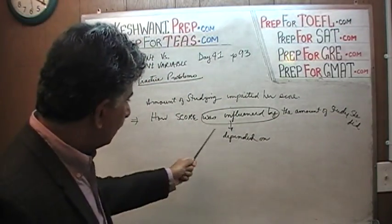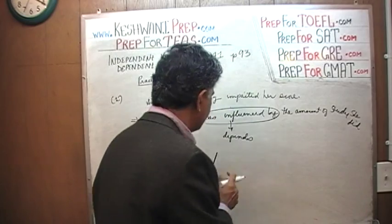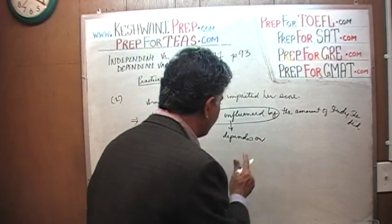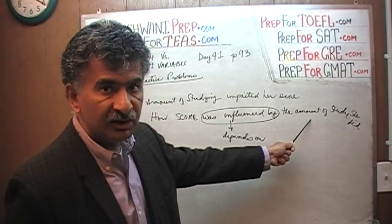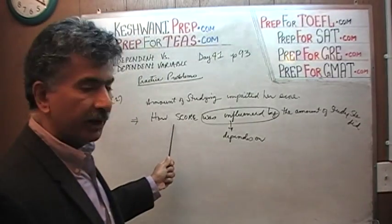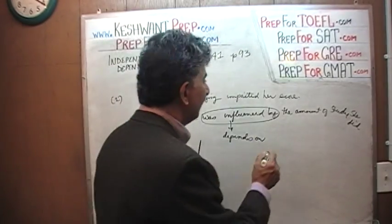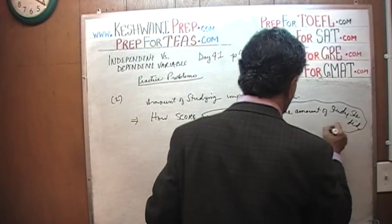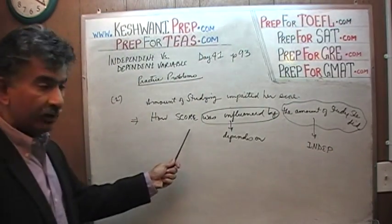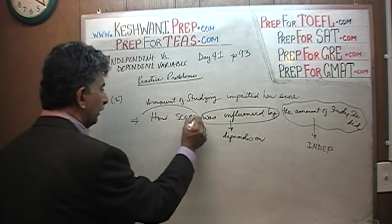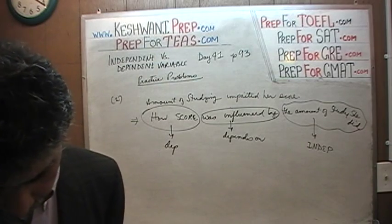Her score depends on the amount of study she did. So the amount of study dictates what kind of score she gets — the amount of study determines the score, so the amount of study is the independent variable. Her score is the dependent variable. That's all there is.